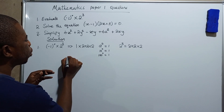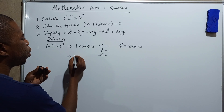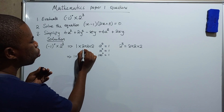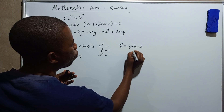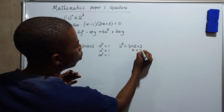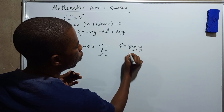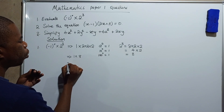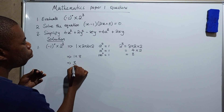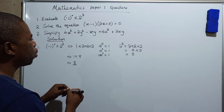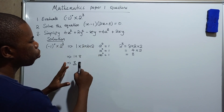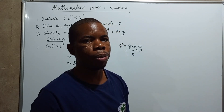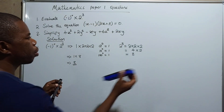So we have one times two times two times two. Two times two is four, then four times two is eight. So one times eight gives you eight. That is your answer. As you can see, there are very few steps involved — this is a free mark you cannot afford to lose in any exam.